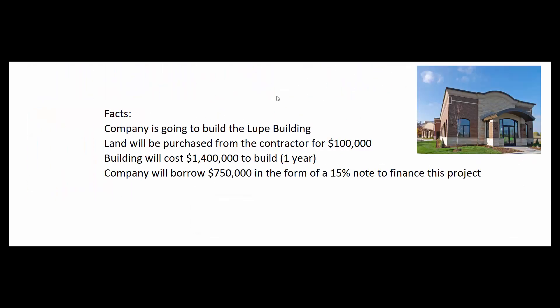Here are the facts for our example. The company is going to build the Lupe Building. They'll buy the land from the contractor for $100,000 and build the building for $1.4 million. Construction takes one year, starting January 1st and finishing December 31st. They borrow $750,000 in the form of a 15% note to finance the project.